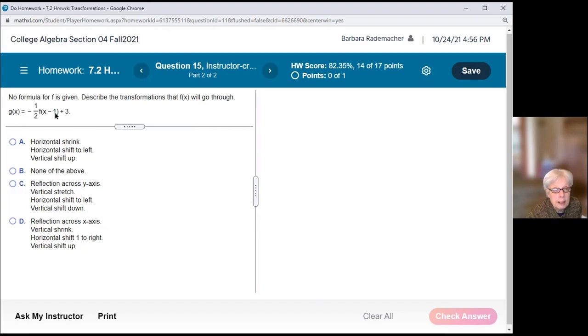X minus 1 is a horizontal shift of 1 to the right. This one half is a vertical shrink. The negative is a reflection across the x axis. And the plus 3 is a vertical shift up 3 units. It's like learning a language. So, we're going to have to read all of these.